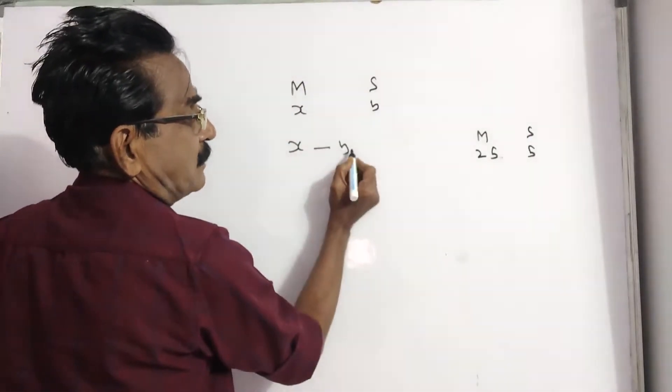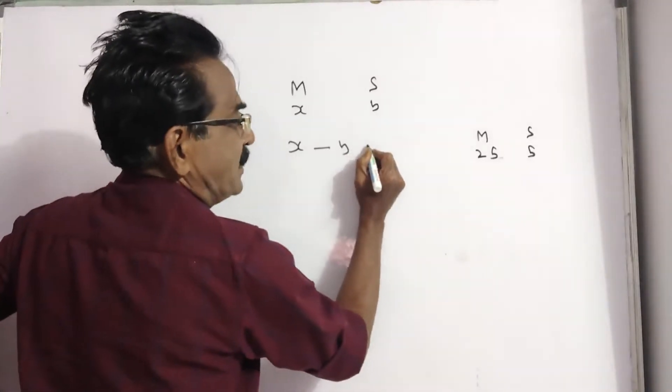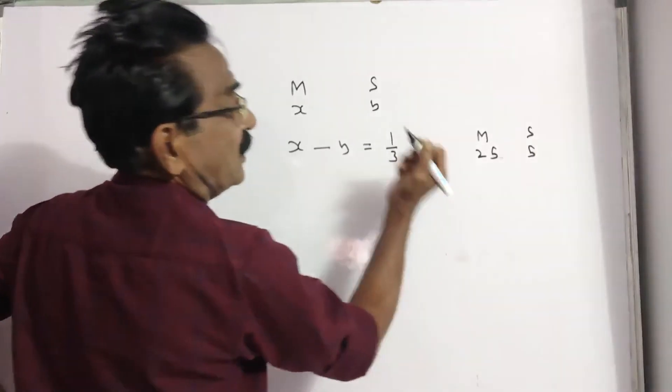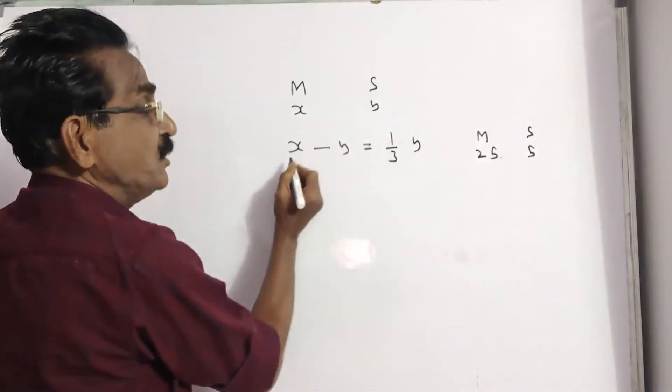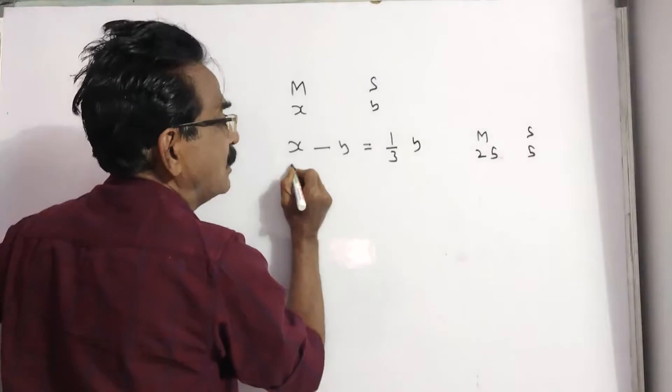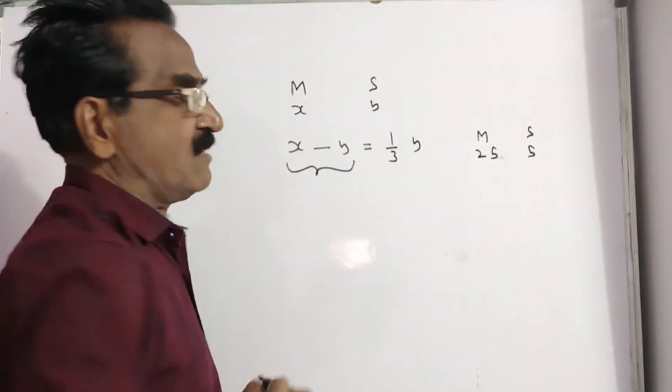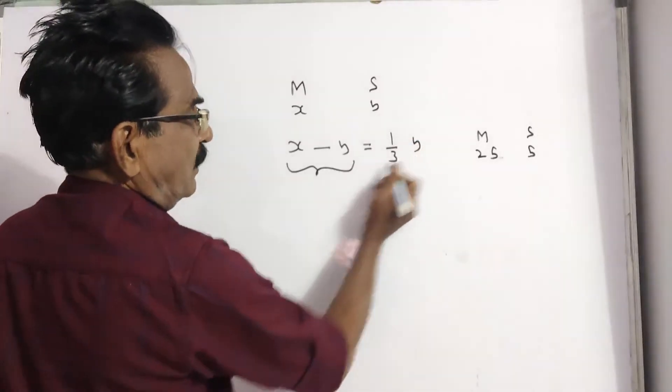man will be x minus y. What man says, I was one third of your age. I was one third of your present age when you were born. So, when son was born, man's age x minus y that is equal to one third of y.